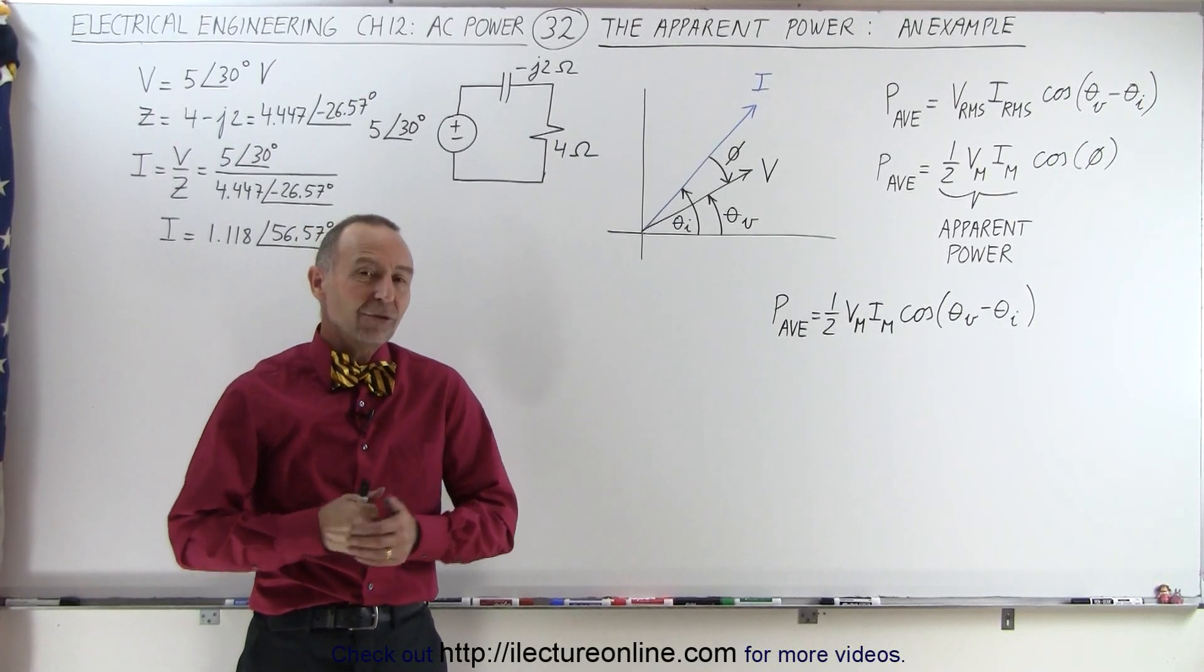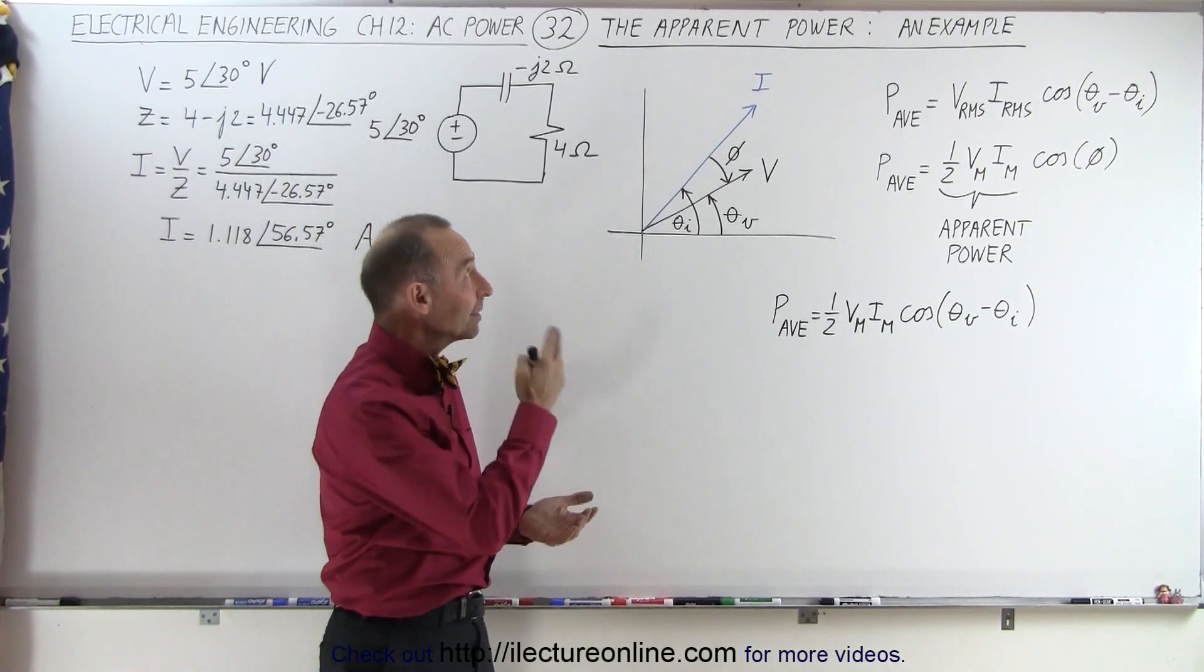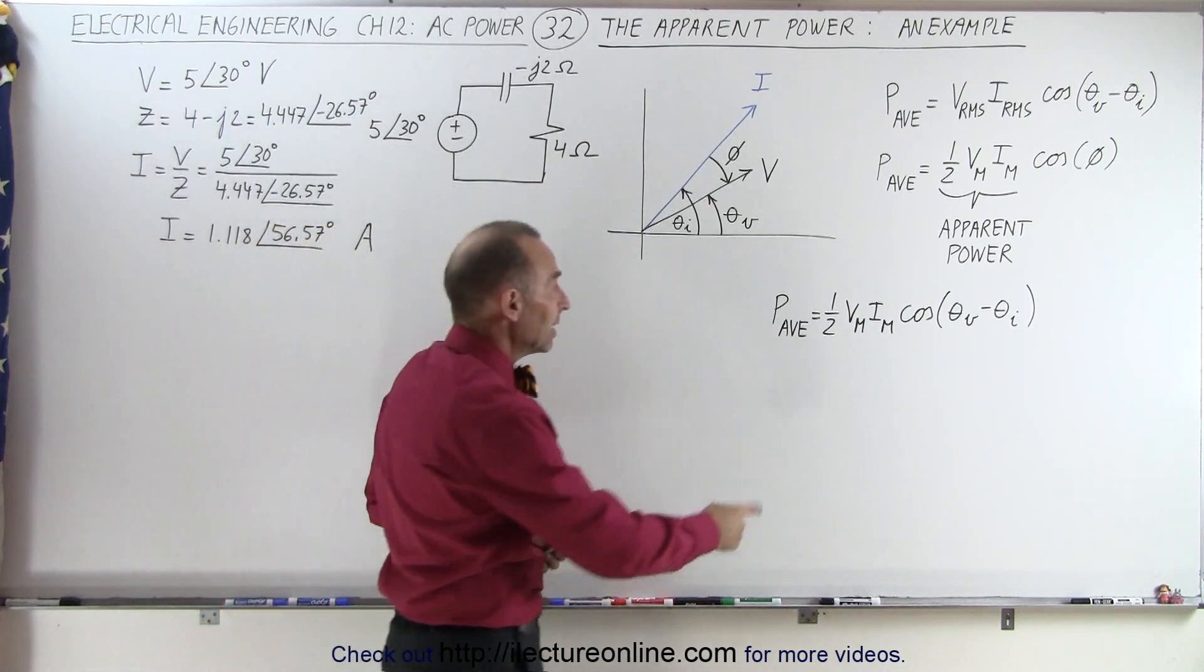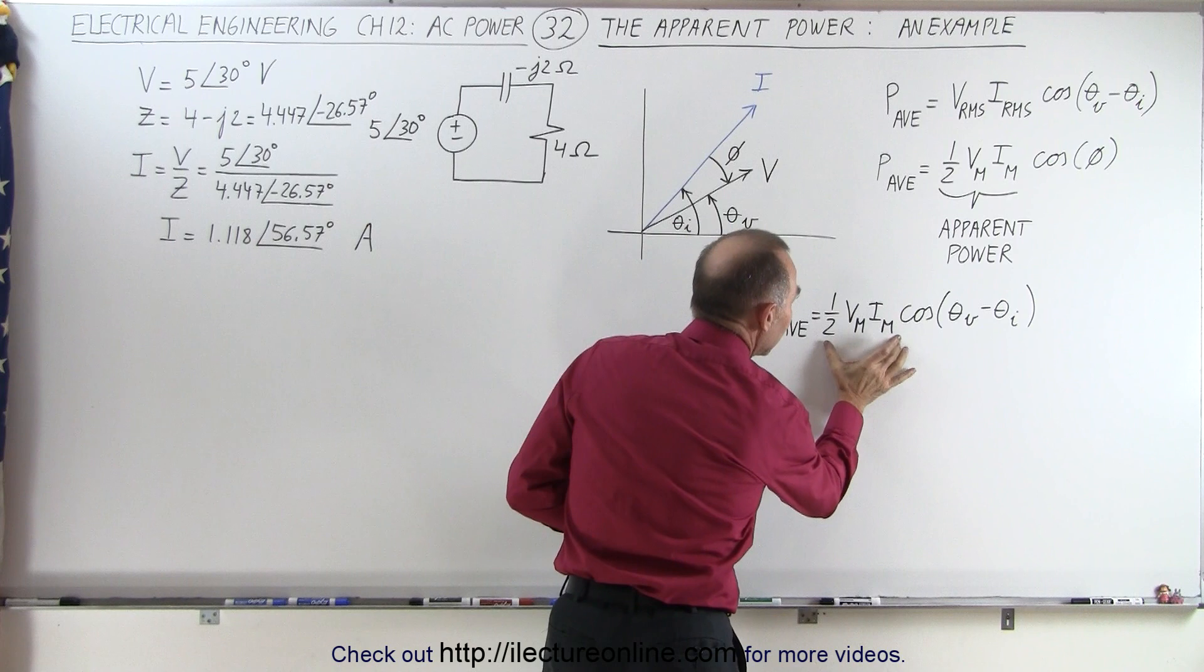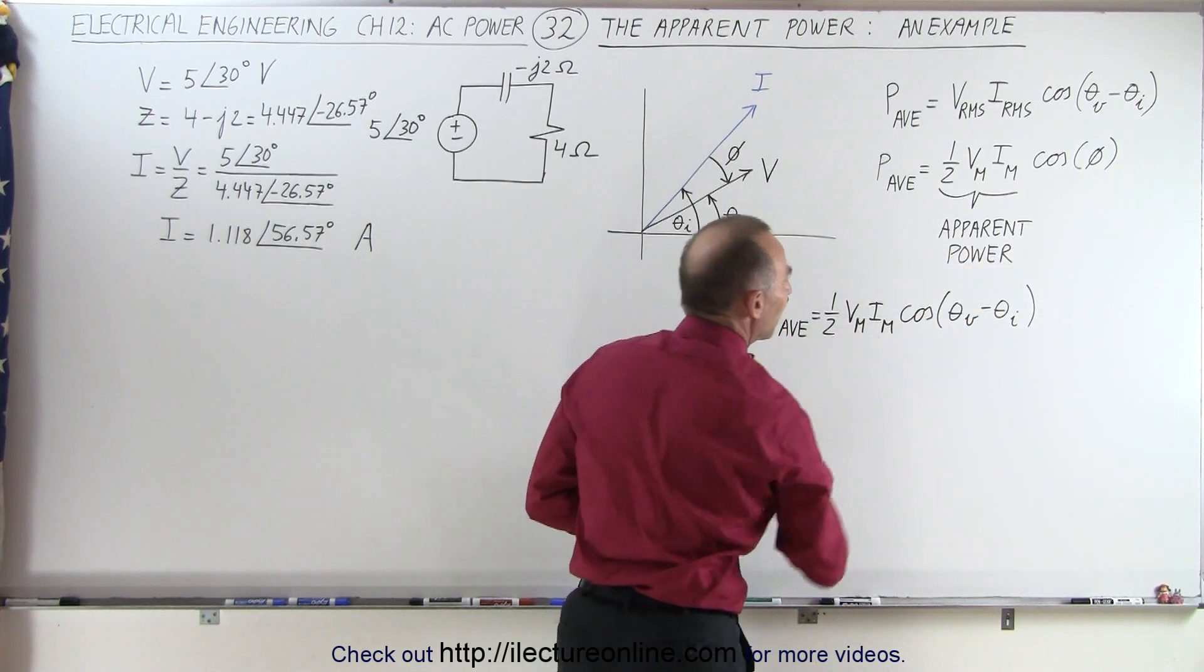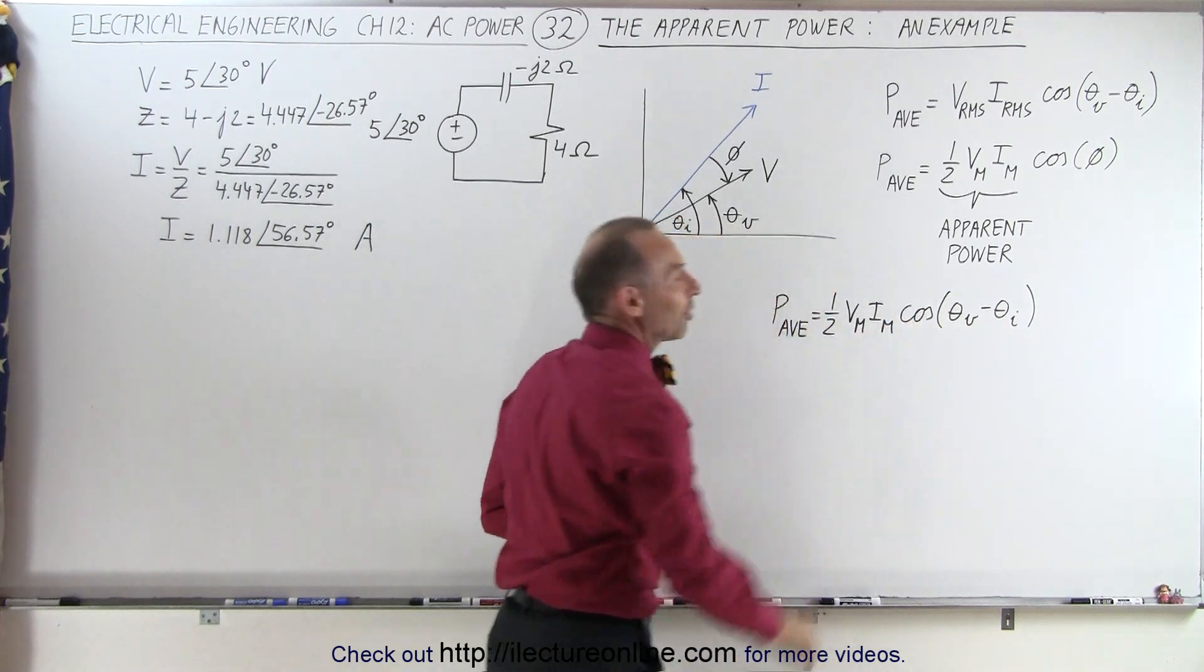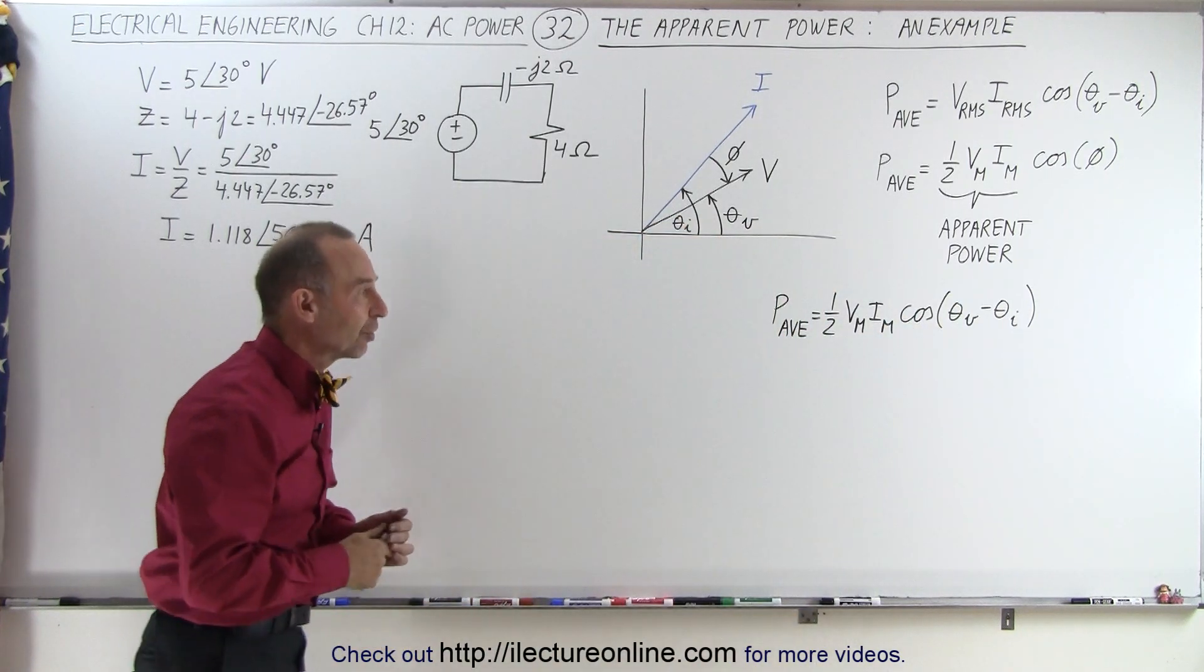Welcome to our lecture online. Now let's do an example of how to calculate the apparent power. It's done by calculating the average power and then taking this portion of it, because that portion is the apparent power. We ignore the part where we have the cosine of the phase difference between the voltage and the current.